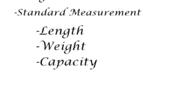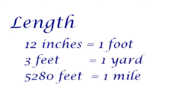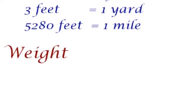So the standard system of measurement was created mostly for length, weight, and capacity—that is how much space something takes up. In length we have that 12 inches equal 1 foot, that 3 feet equal 1 yard, and that 5,280 feet equal 1 mile. Many of these we deal with on a regular basis.